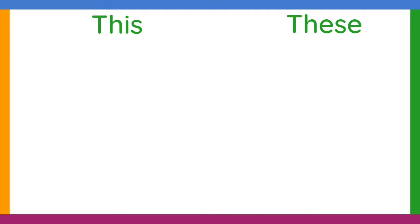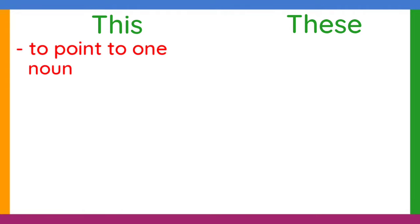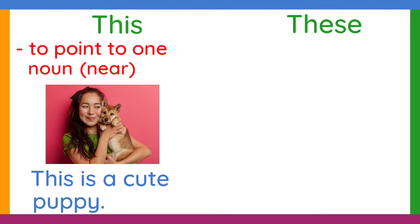Let us have this and these first. This is used to point to only one person or thing that is near the person talking. For example, this is a cute puppy. We use this in the sentence because the puppy is very near the speaker. She is even holding it. And there is only one puppy.